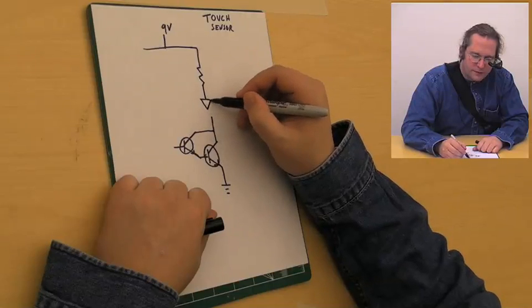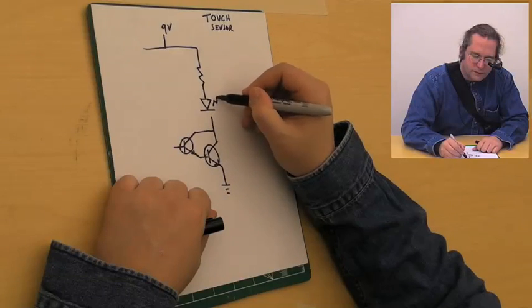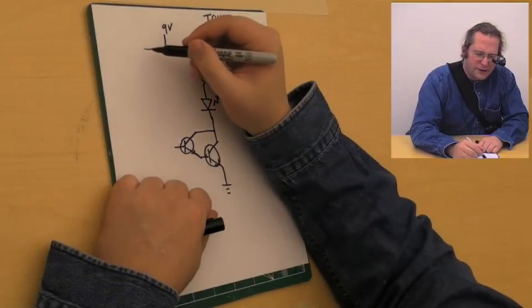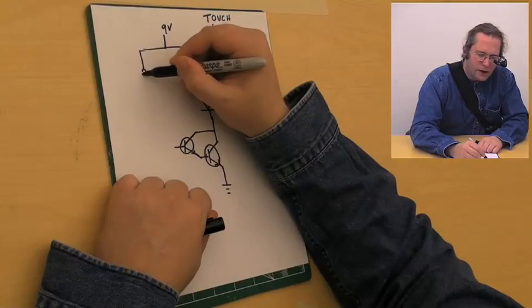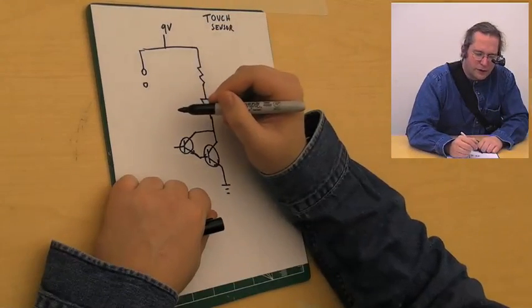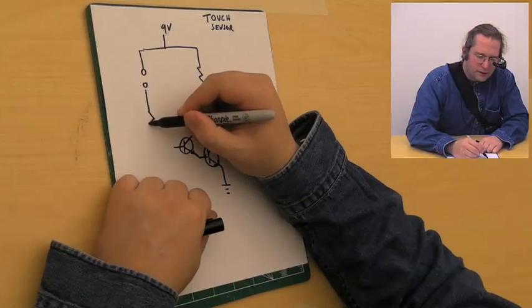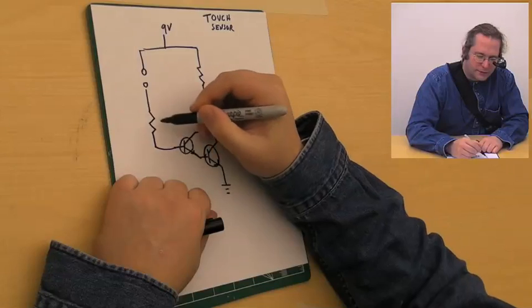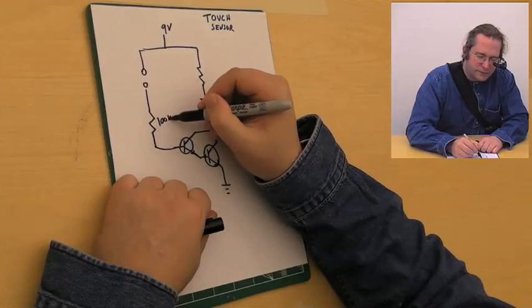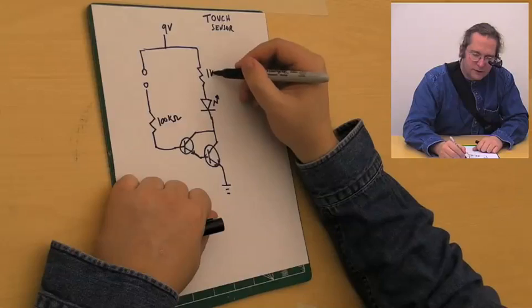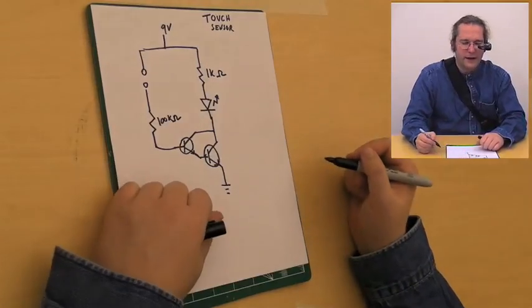We're going to have an LED, and on the other side we're going to have our 2 electrodes, a 100 kilo-ohm resistor, and that's actually it.